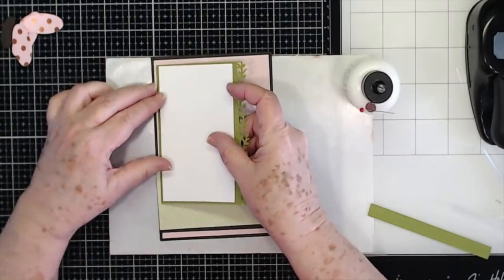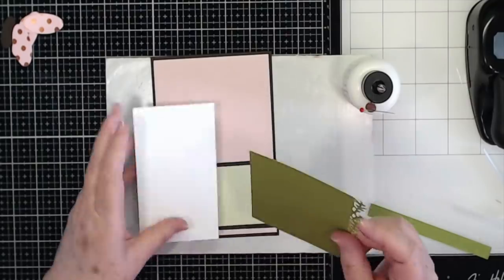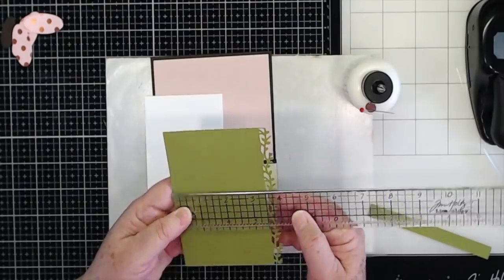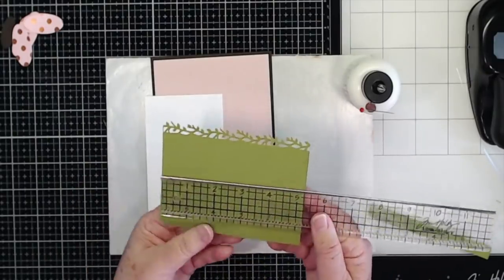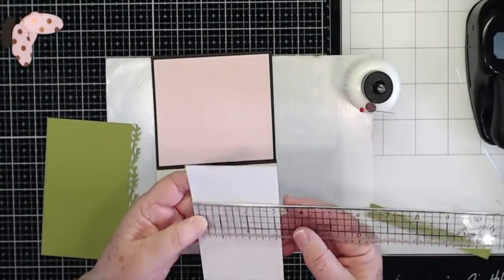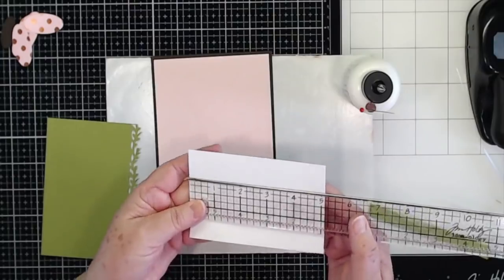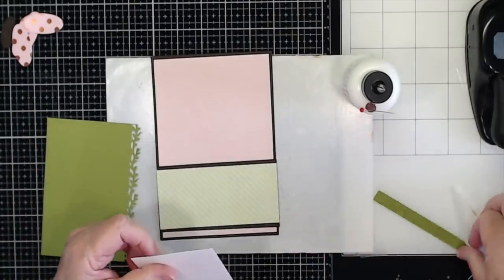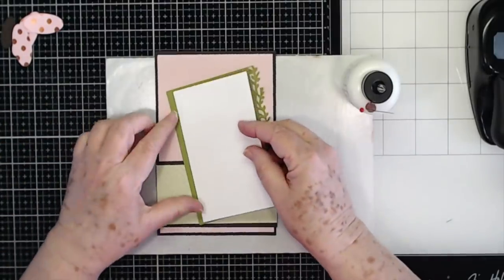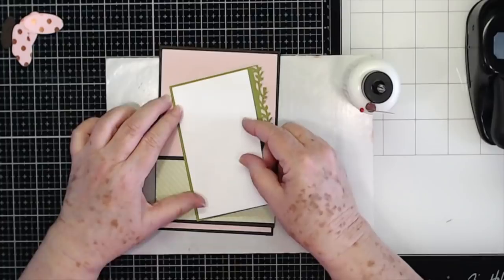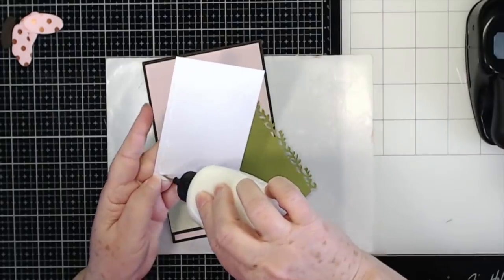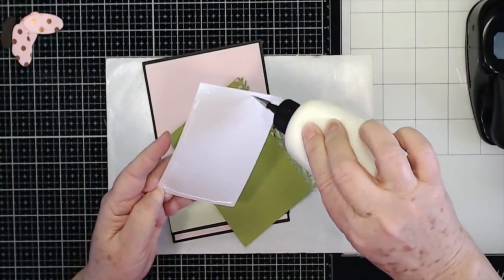So this piece is cut down to four inches by five and a quarter, and then this one is cut at three and a quarter by five and an eighth. And if you don't want to do the eighths, you could make it five and that would be fine. So we're going to put that down. I'm going to glue it flat down because I'm going to put dimensions on something else.